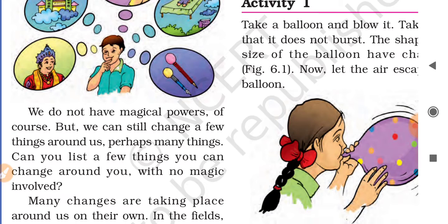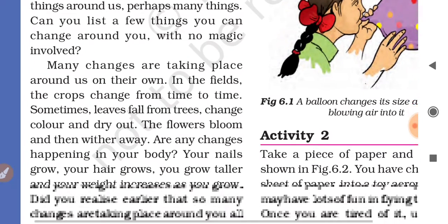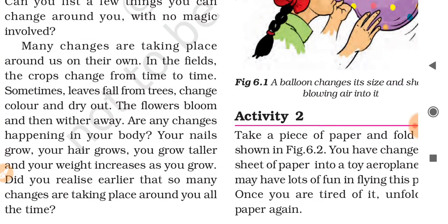We do not have magical powers, of course, but we can still change a few things around us. You cannot change your friend's nose, but there are some changes you can make. Can you list a few things you can change around you with no magic involved? Many changes are taking place around us on their own. In the fields, crops change from time to time. Sometimes leaves fall from trees, change color, and dry out.